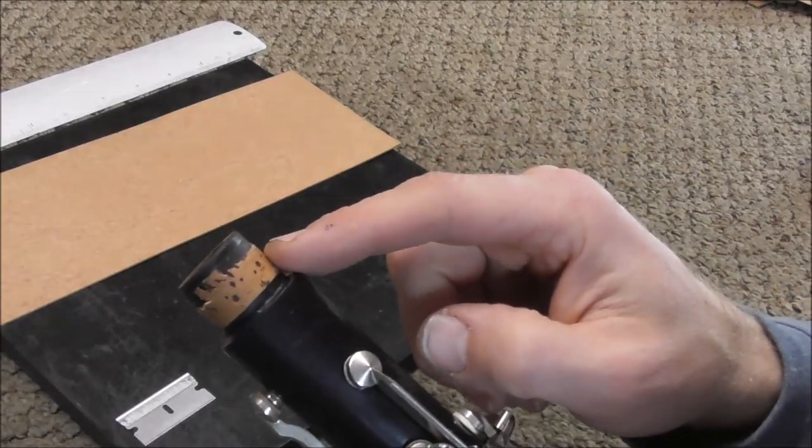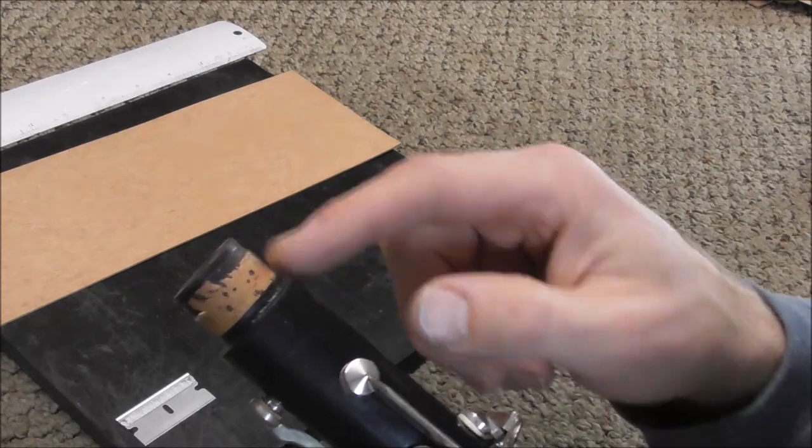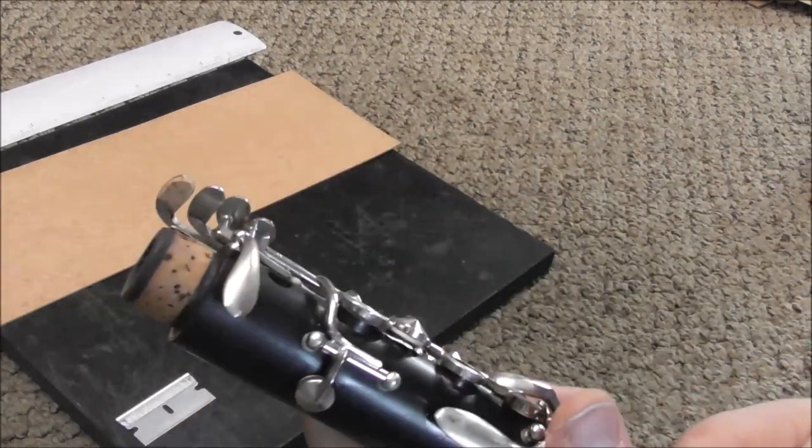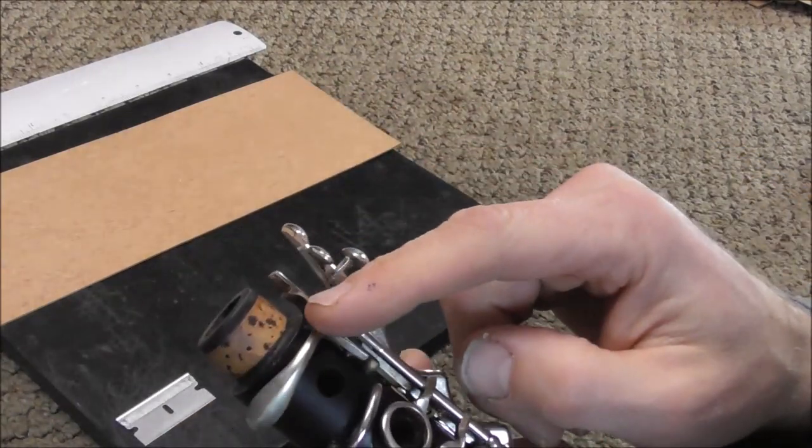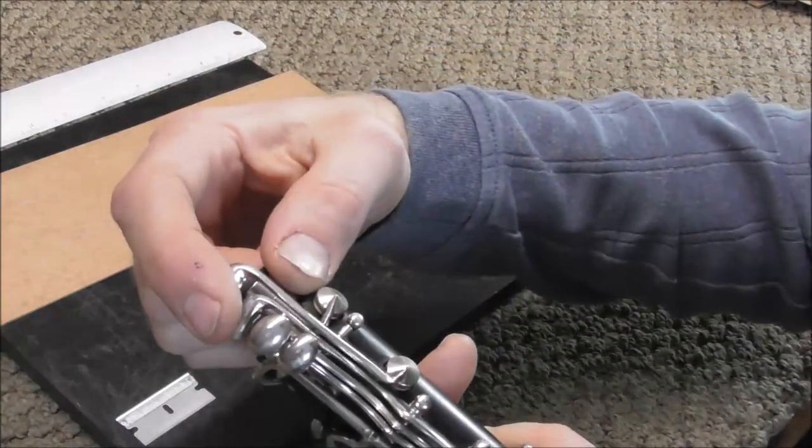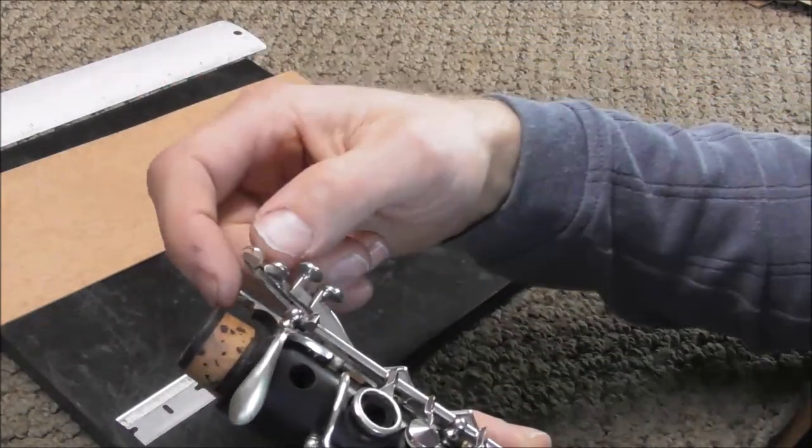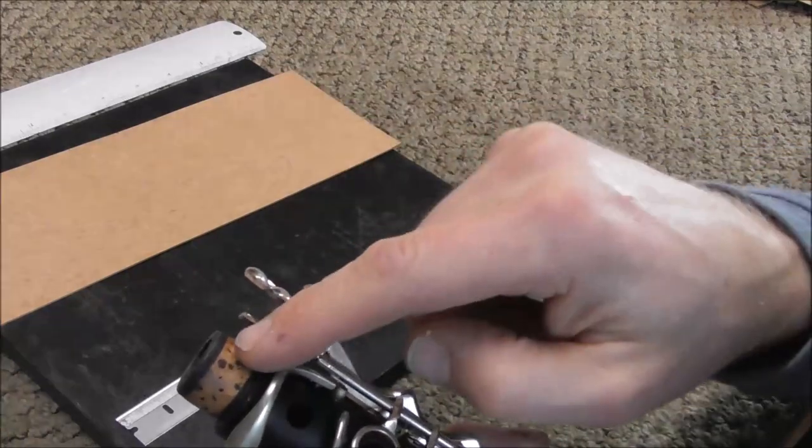On this tenon there are no keys in the way of the cork so you can just remove the cork and replace it. On the middle tenon however there are some keys in the way, so you need to remove the bottom two side keys and the bridge key in order to get at this joint.